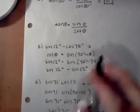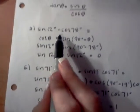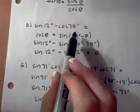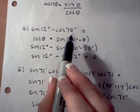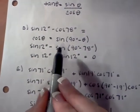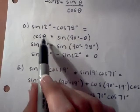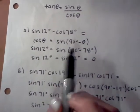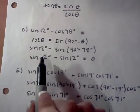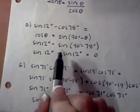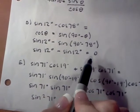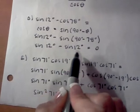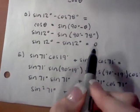For the fourth one, sine of 12 degrees minus cosine of 78 degrees, we'll use the complementary angle theorem: cosine theta equals sine of 90 degrees minus theta. So sine of 12 minus sine of 90 minus 78 equals sine of 12 degrees minus sine of 12 degrees, which equals 0.